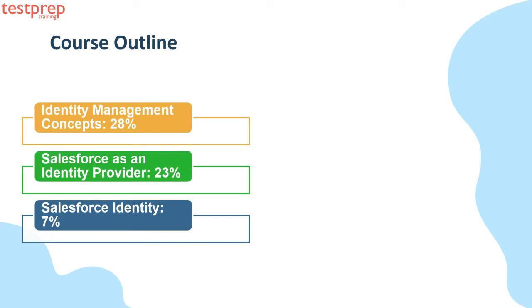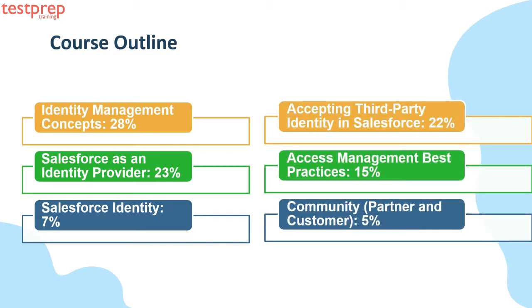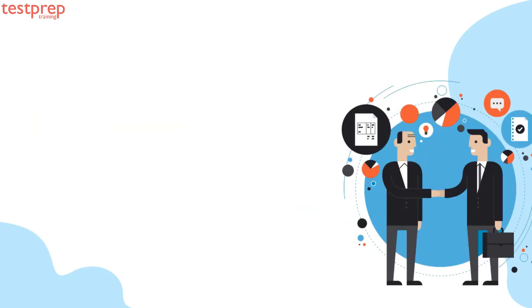Course outline: first, Identity Management Concepts — 28% weightage; second, Accepting Third-Party Identity in Salesforce — 22%; third, Salesforce as an Identity Provider — 23%; fourth, Access Management Best Practices — 15%; fifth, Salesforce Identity — 17%; sixth, Community Partner and Customer — 5%.